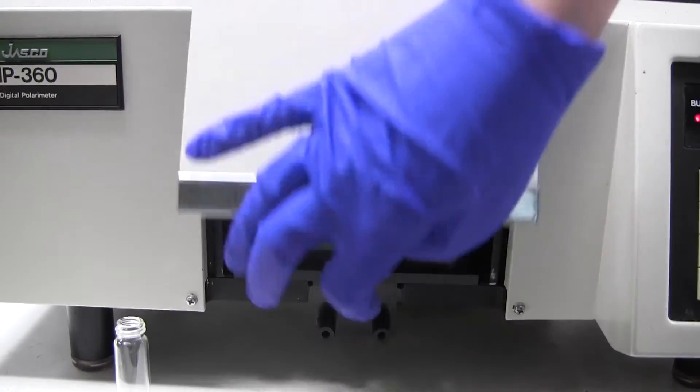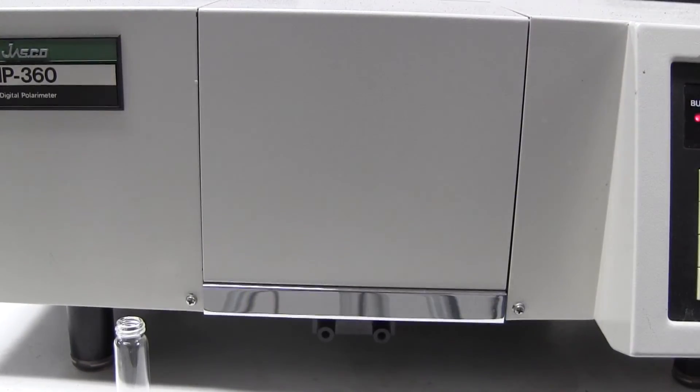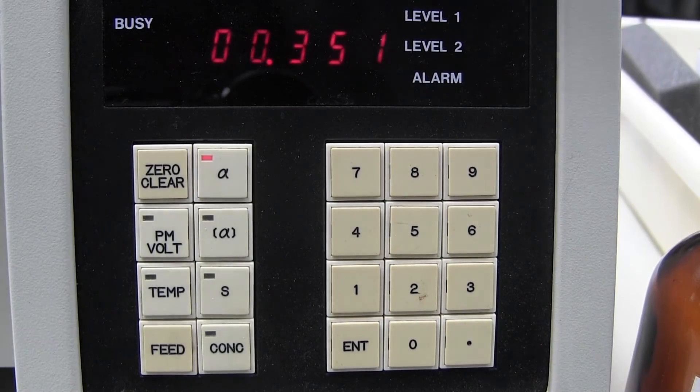Close the cover and wait for the readout to become constant. Record this amount. Remove the cell and close the door.